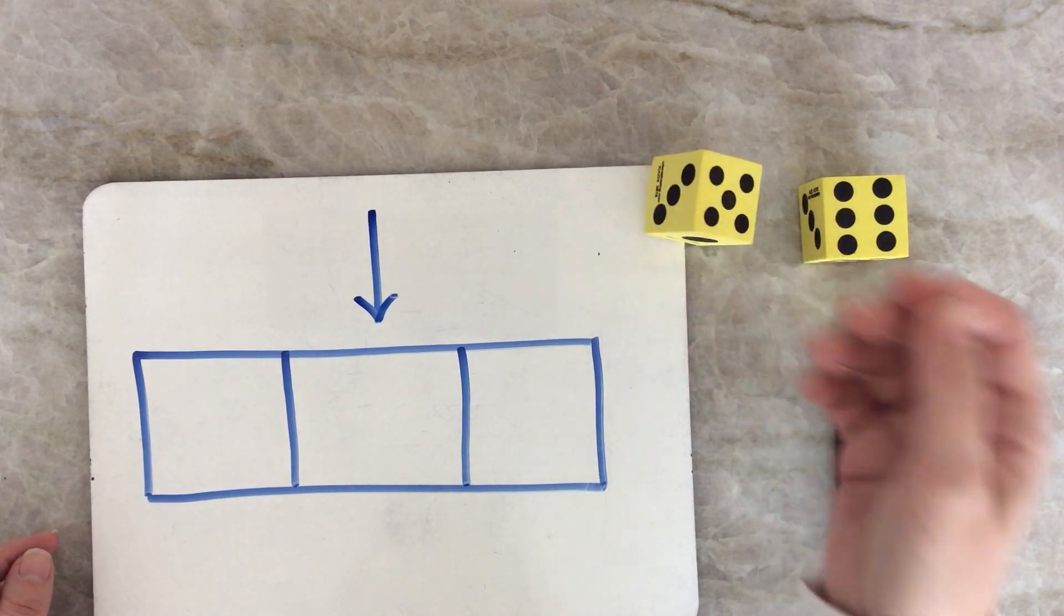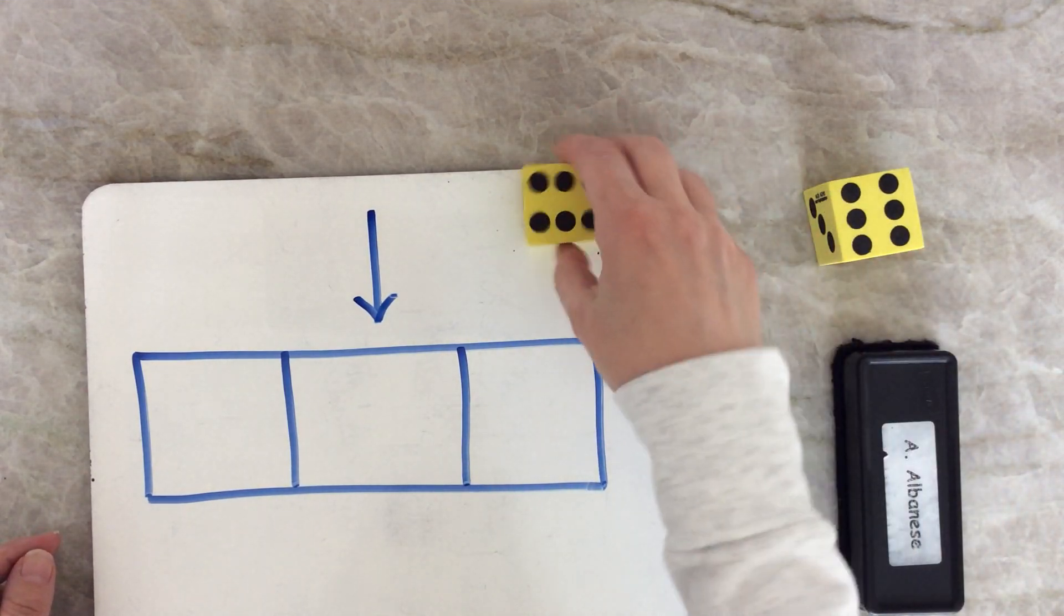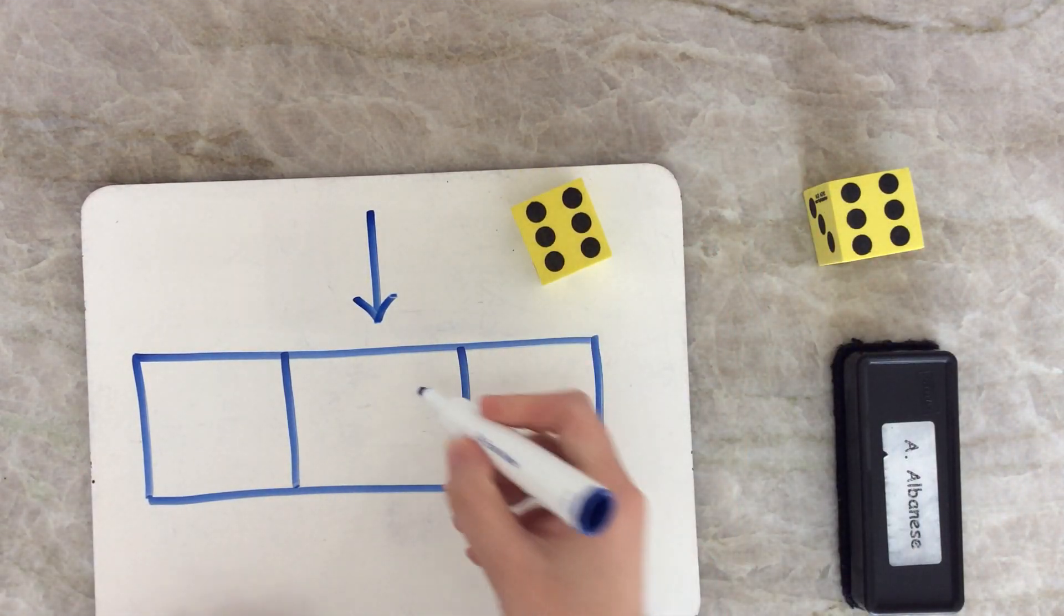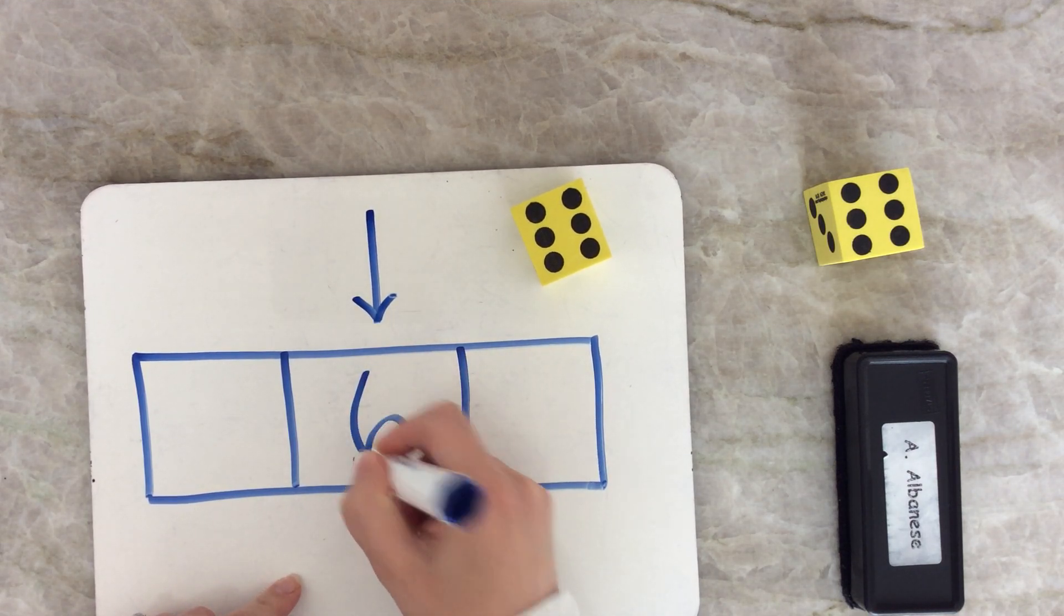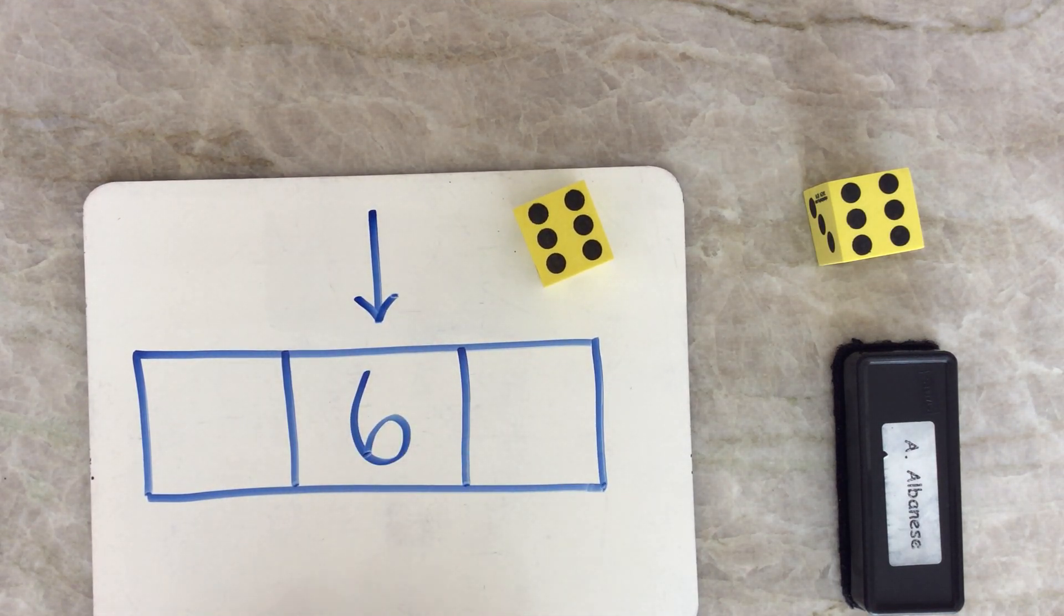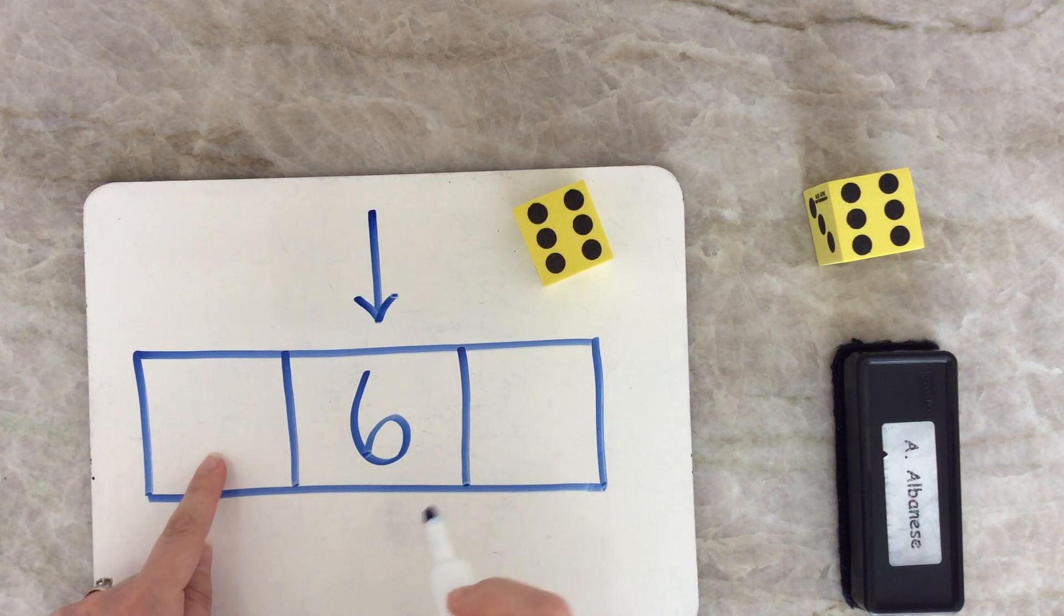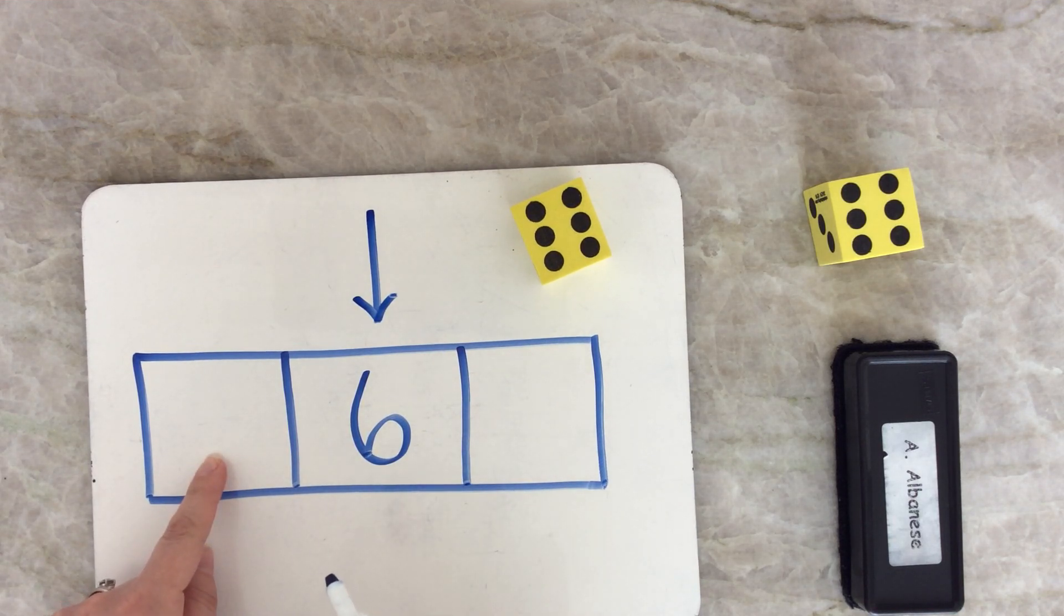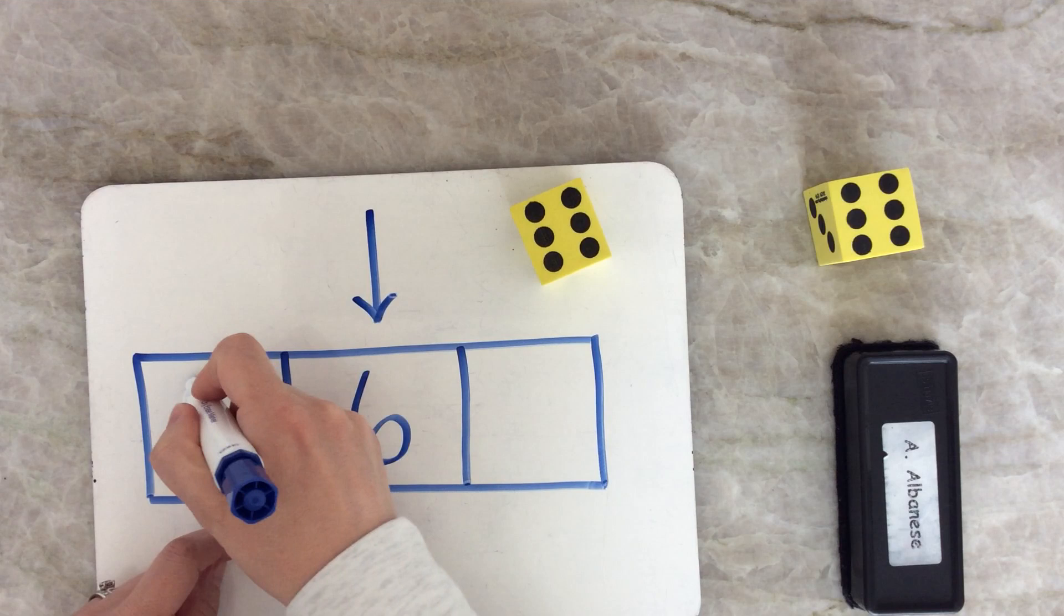You take your dice and you roll it. I rolled a six. I'm going to write that number here in the middle box. Remember, the game is called Before and After. What number comes before six? That's right, it's five.